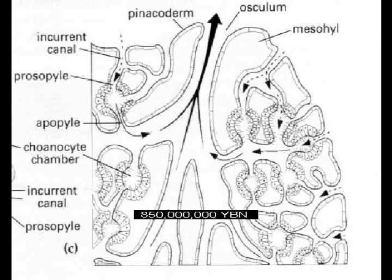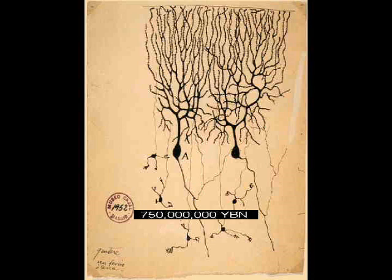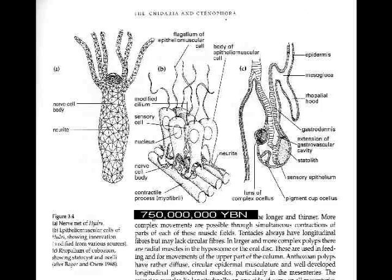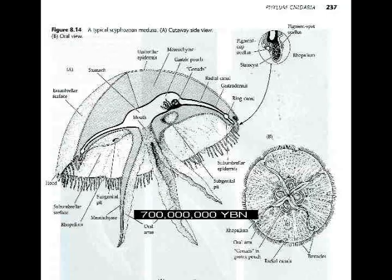Male gonad. Animal cells group as tissues. First nerve cell, neuron, and nervous system. Earliest touch and sound detection. Muscle cells. Cnidarians. Corals. Jellyfish.